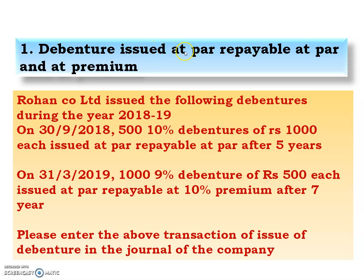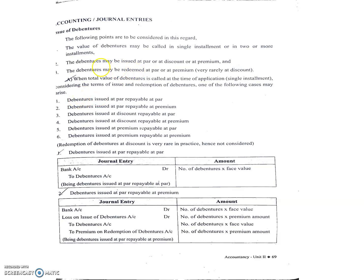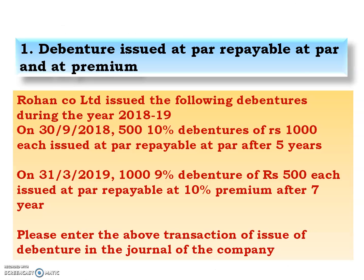Here we have two cases. First, debentures issued at par and repayable at par. Second, debentures issued at par and repayable at premium. We need to understand how to pass journal entries and do the calculations for each case. Let's look at the problem for Rohan Company Limited.